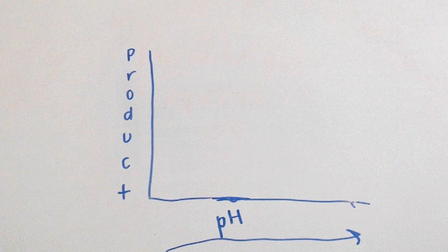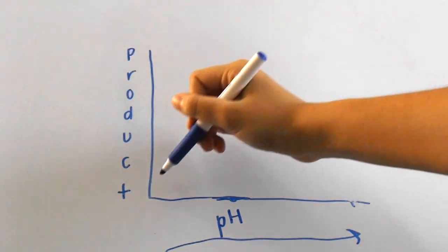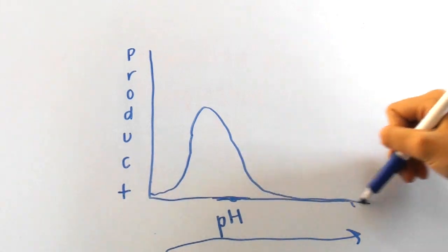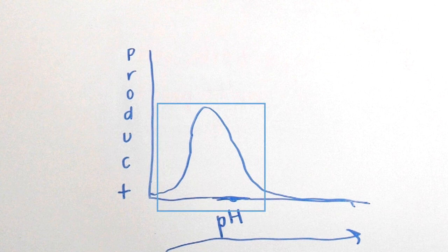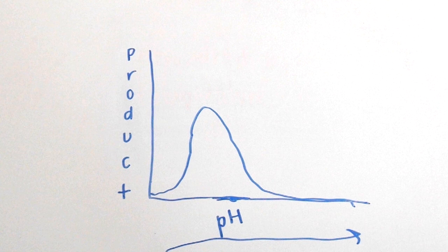The last graph we'll look at today is this pH graph. It's very similar to the temperature graph and this is showing the optimal pH of a stomach enzyme. Of course, the stomach is very acidic so it would make sense that the optimal pH of this protein is very low. Any pH value that is too high or too low can also denature enzymes, making them unable to function.